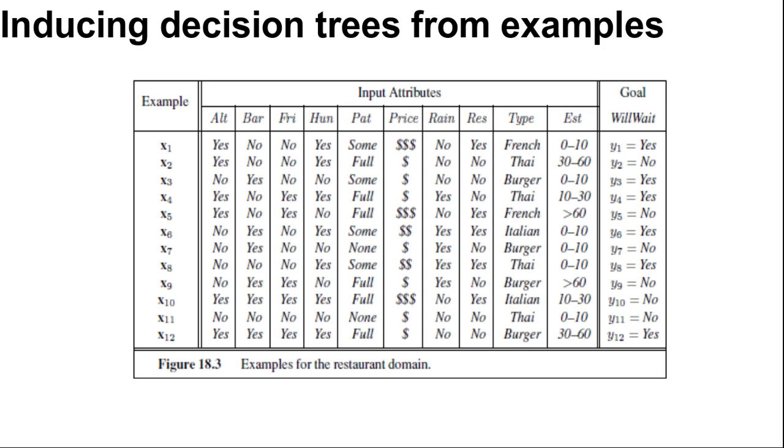An example for a boolean decision tree consists of an x-y pair. You can see here in the diagram also, where x is a vector of values for the input attributes and y is a single boolean output value, and a training set of 12 examples.